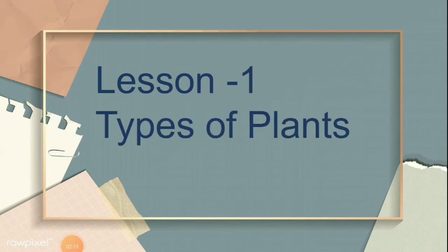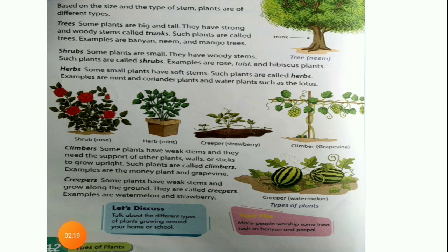Lesson number 1, types of plants. In our last video, we learned about climbers and creepers, and before that we learned trees, shrubs and herbs. So these are the different types of plants: trees, shrubs, herbs, climbers and creepers. We have already learned this in detail in our previous video.